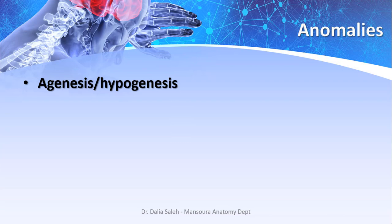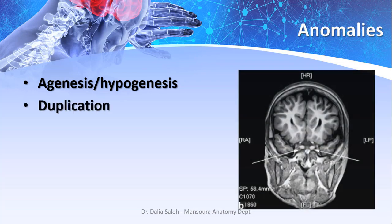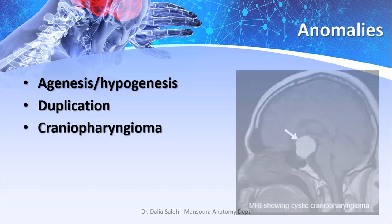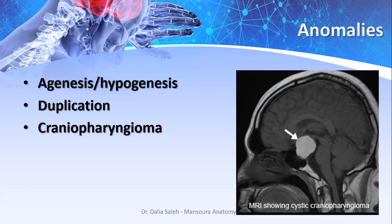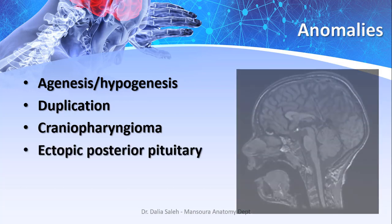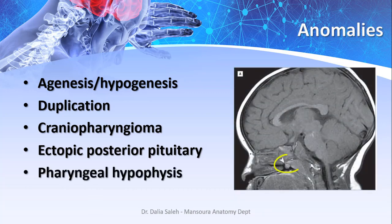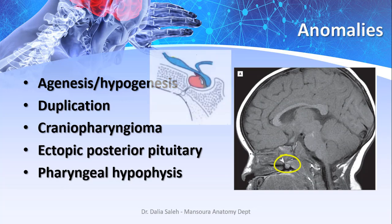For anomalies of the pituitary gland: we could end up with agenesis, which is incompatible with life, or hypogenesis, which leads to pan-hypopituitarism. We may also have duplication of the pituitary gland, resulting from early malformation at the cranial fissure region — a very rare anomaly. We could also have craniopharyngioma, a group of tumors presenting in the sella turcica from remnants of Rathke's pouch. Ectopic posterior pituitary gland appears on MRI as a bright spot at the region of the median eminence, away from the sella turcica. Finally, we could have pharyngeal hypophysis, resulting from lack of detachment of the pituitary gland from the roof of the mouth.